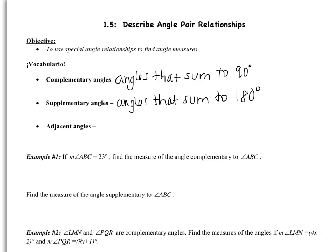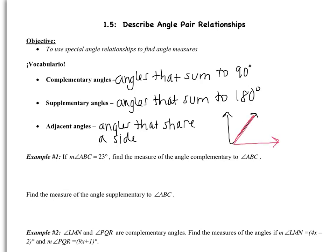Adjacent angles are angles that share a side. Remember that the side is the ray. So if I have this angle here, those two rays are the sides. Now if I pick this side and draw another angle here, these two angles are adjacent because they share this side in the middle.